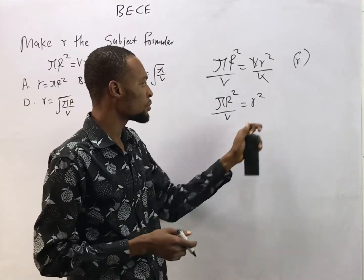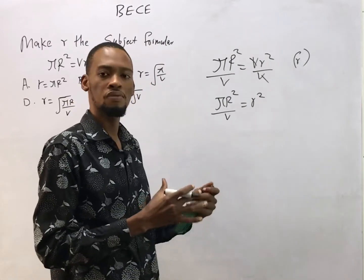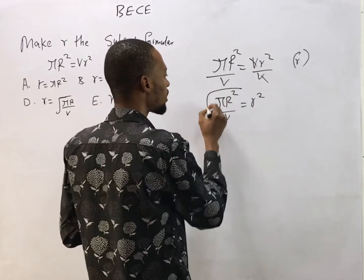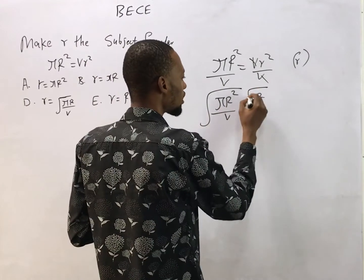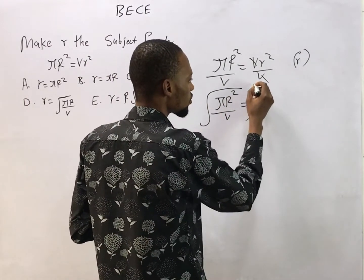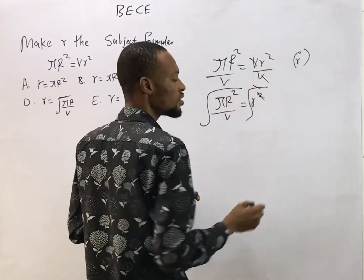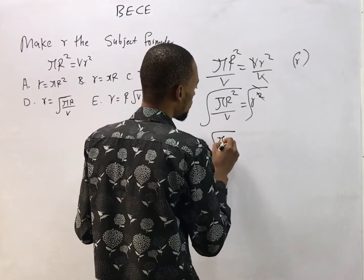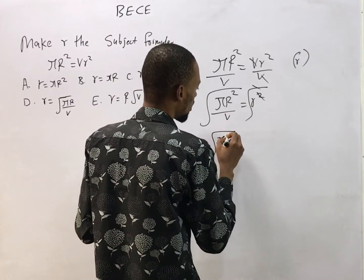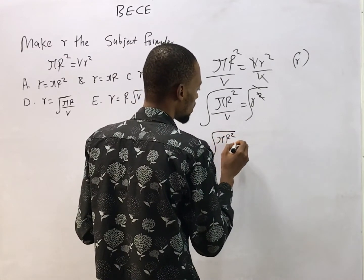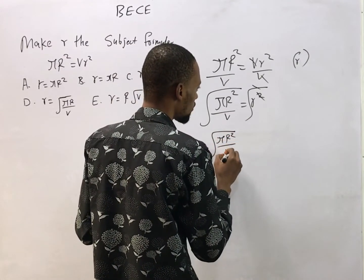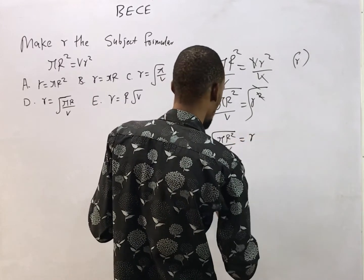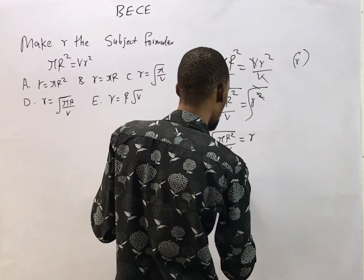Now to remove the square, take the square root of both sides. The square root will remove this square, and I'll be left with square root of πR² over V equals r. So r equals the square root of πR² over V.